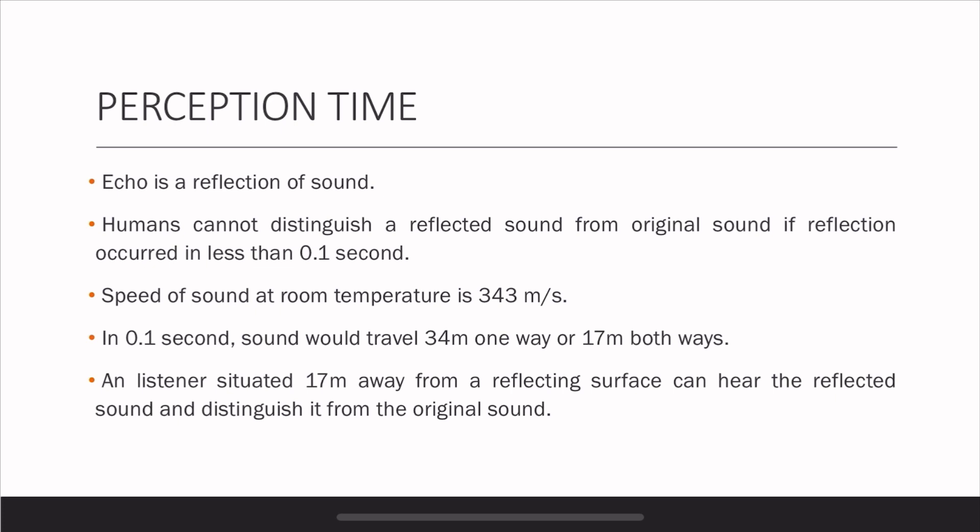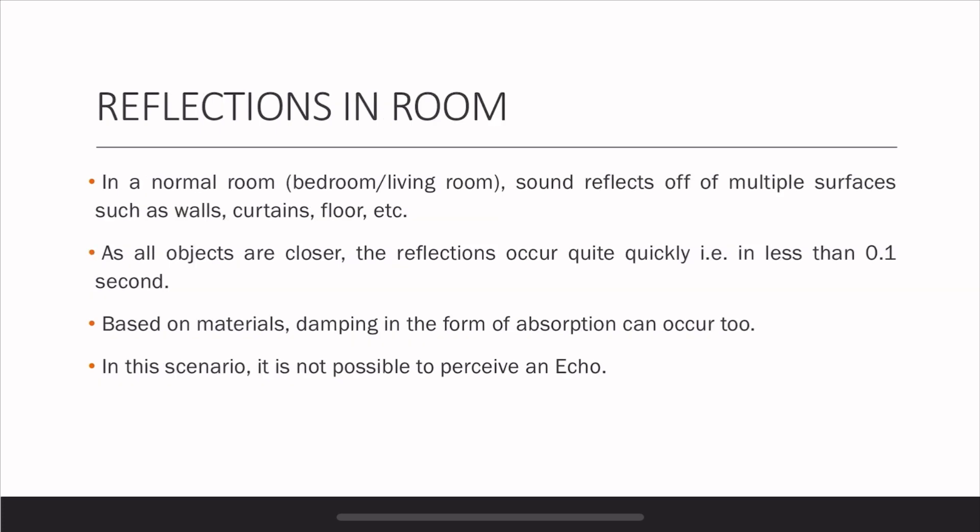The reflected sound cannot be distinguished from the original sound at shorter distances. Now, what about reflections in a room? We need to consider that echo is a single reflection. In a room, we have walls, ceiling, floor, and other objects like a couch and curtains. All these objects are very close to each other, and there are multiple objects and multiple surfaces, so sound has lots of opportunities to reflect.